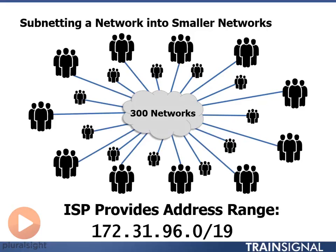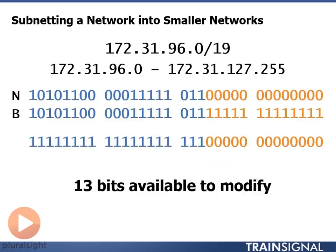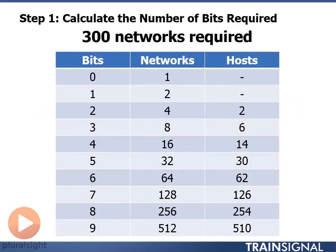So last problem here, we need 172.31.96.0/19. We convert this to binary to find out what our address and mask are and what the first and last addresses are. Our first address is 172.31.96.0, and the last address is 172.31.127.255. We have 13 bits available to modify. We have 300 networks that are required. In order to accommodate 300 networks, we need to borrow 9 bits.